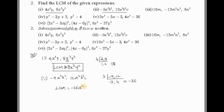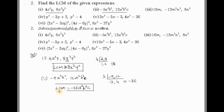For b: both terms have b², so the highest power is b². For c: only the second term has c, so we take c¹. When a variable appears in only one expression, we still include it with its power. So the LCM is -36a³b²c.